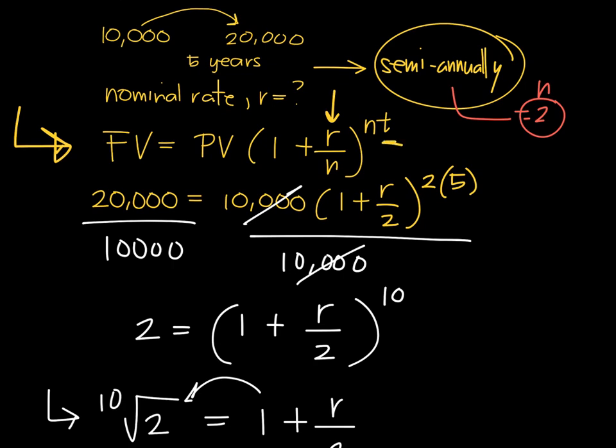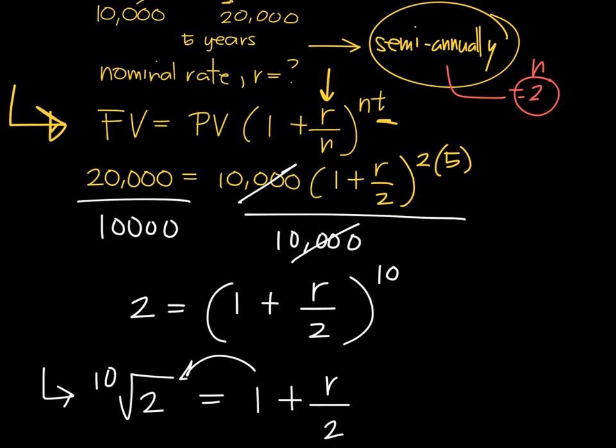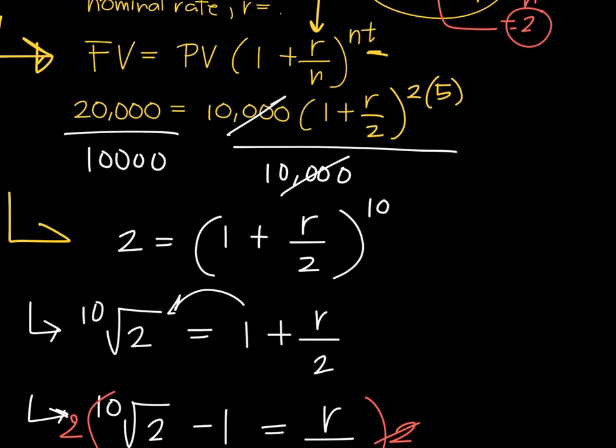After that, it's all about manipulating the formula until you get R. The common approach is to first divide both sides by the PV, then it's reduced to a shorter equation.